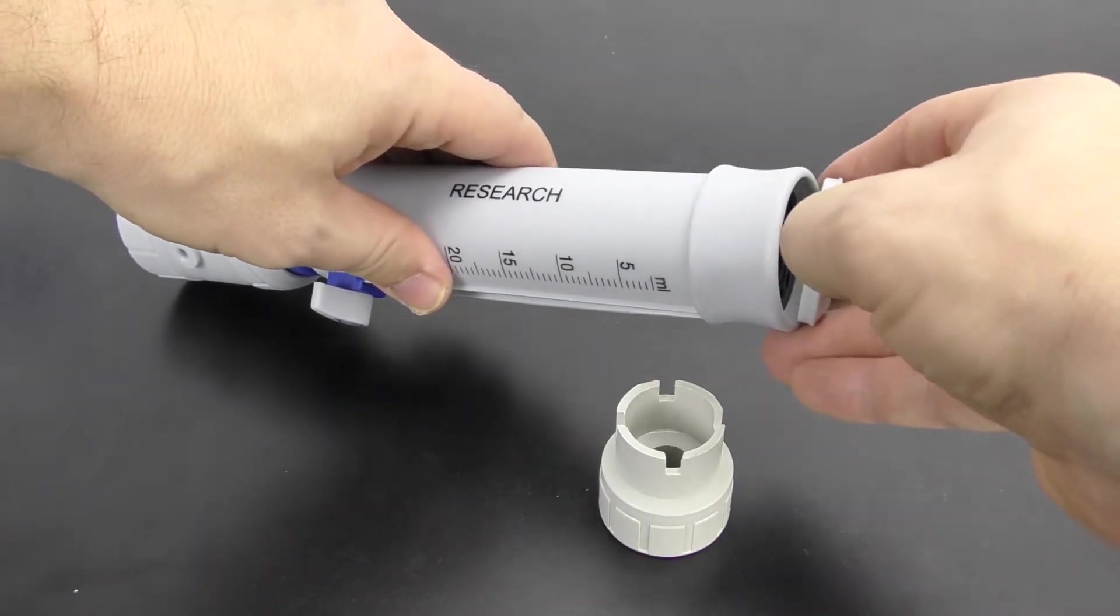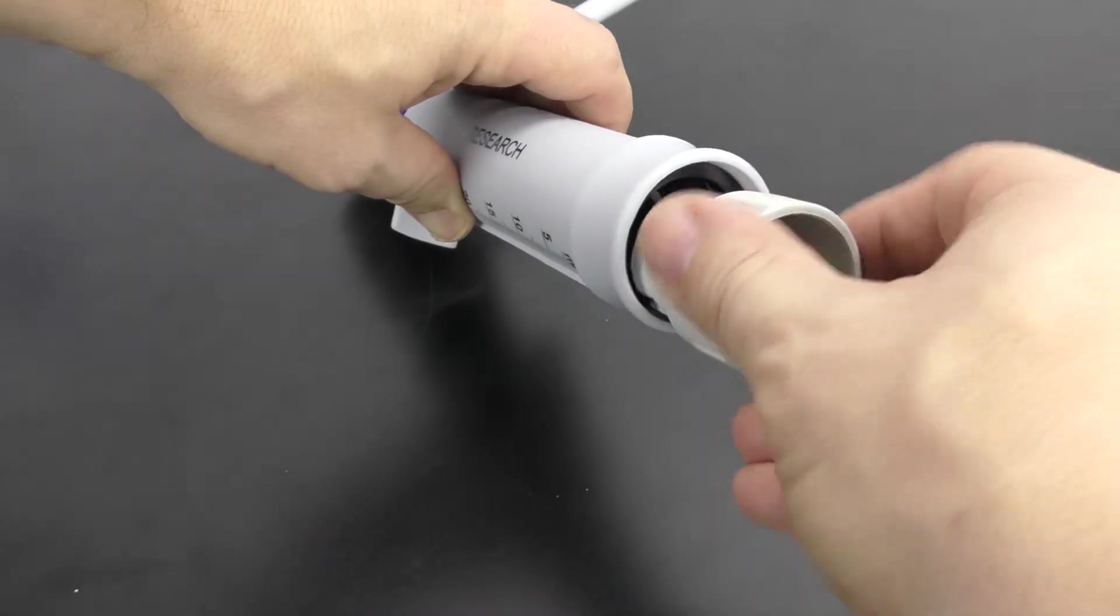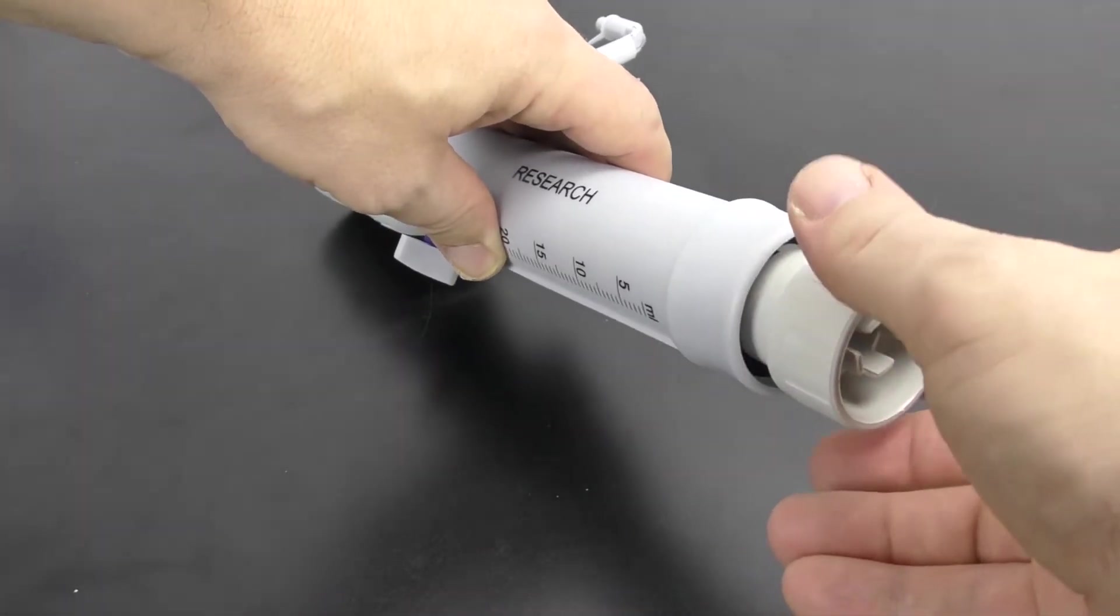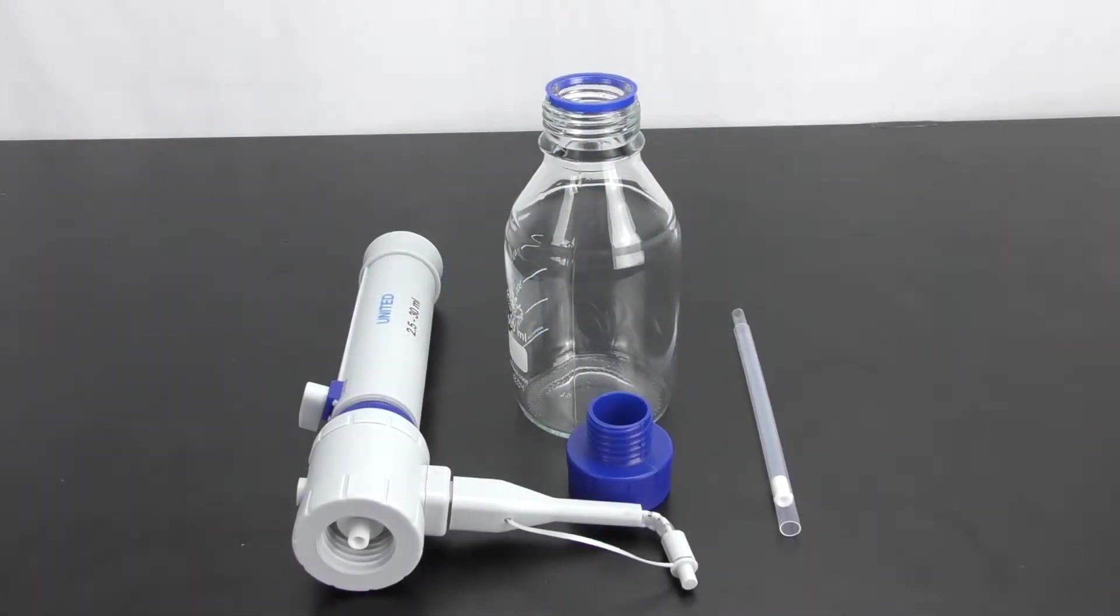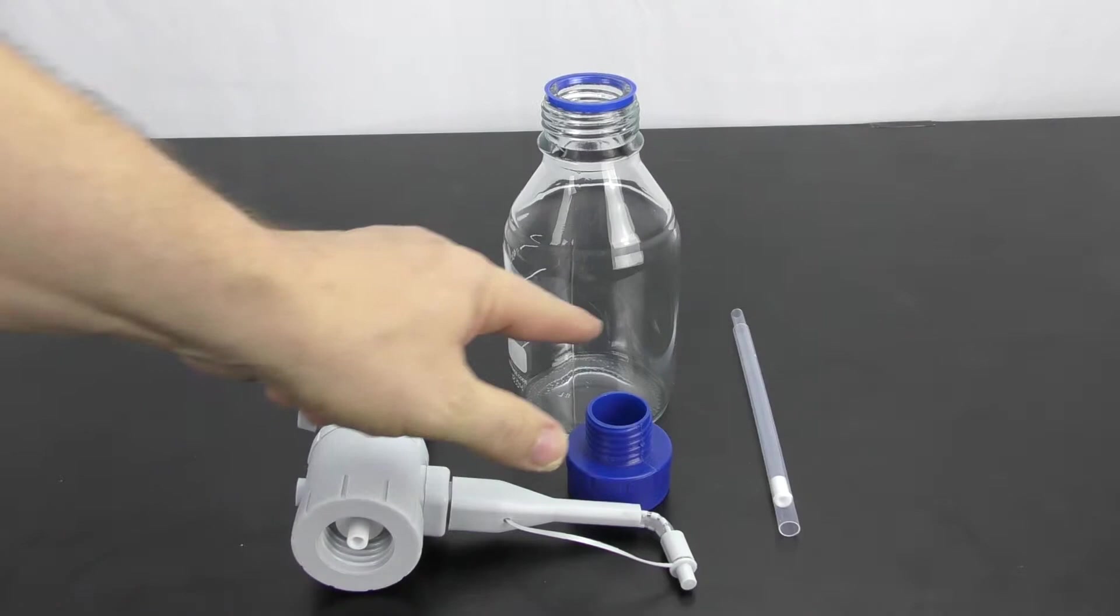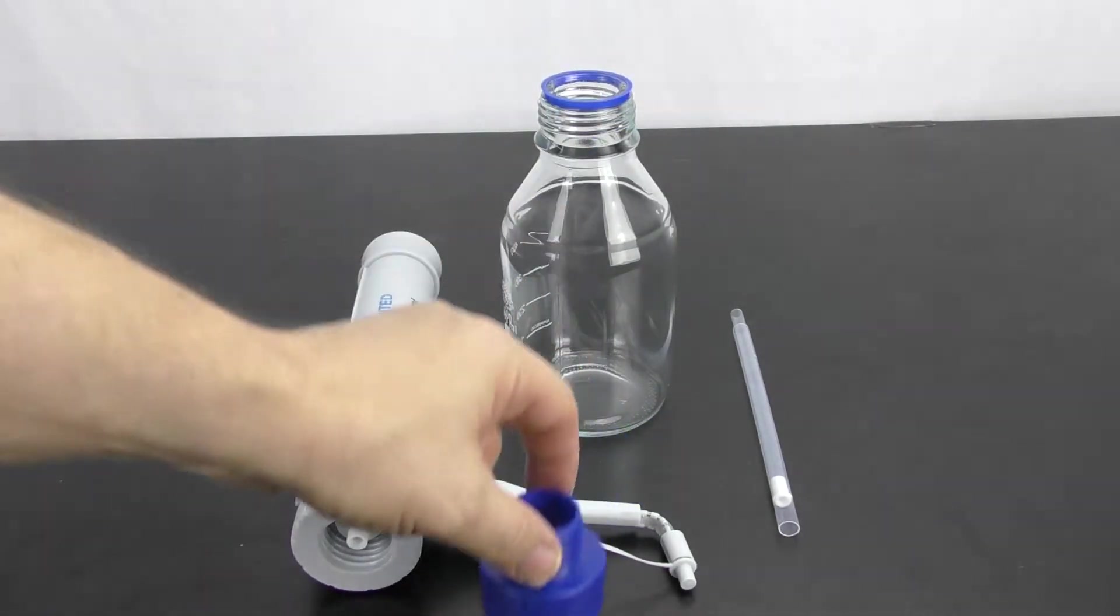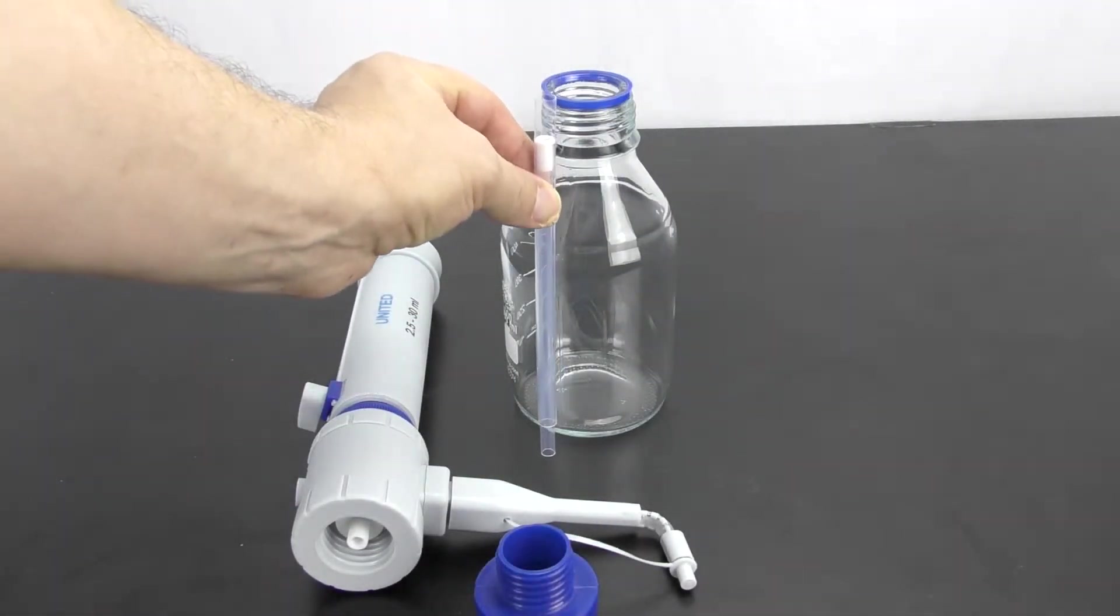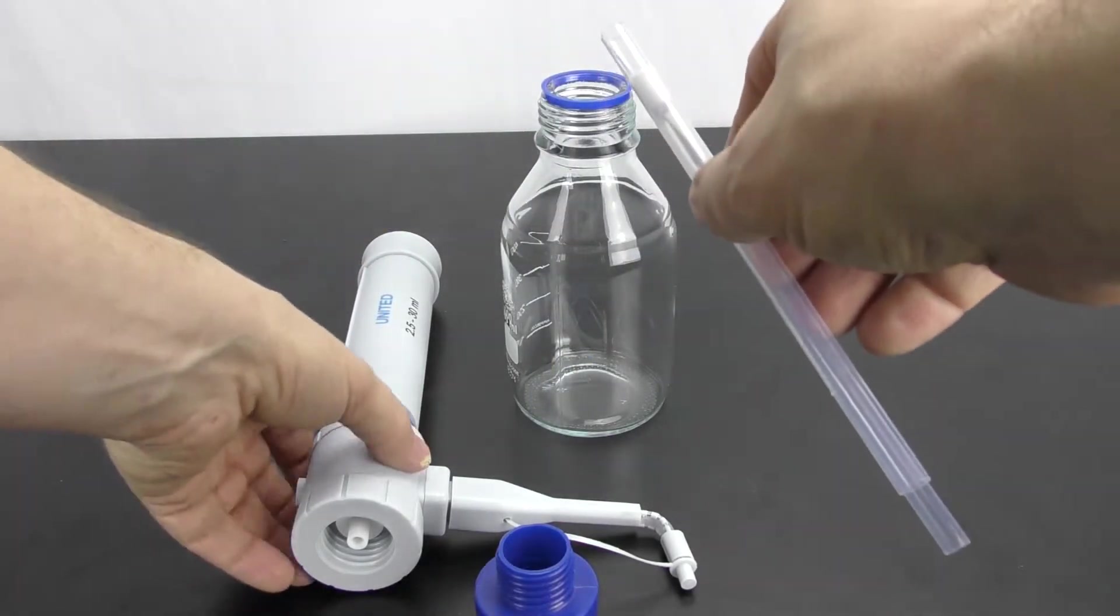You just pop the cap off the end and you can insert this to recalibrate your pump if it is ever off. Assembly is very easy and straightforward. I find the appropriate adapter that fits my media bottle, I adjusted the height of the straw to reach just the bottom of the bottle, then you just put them all together.